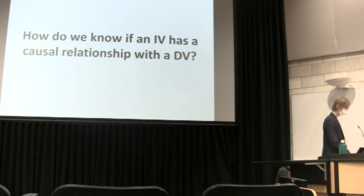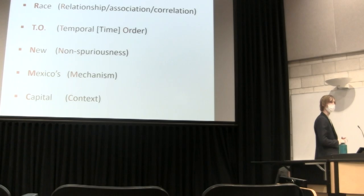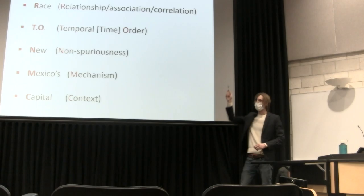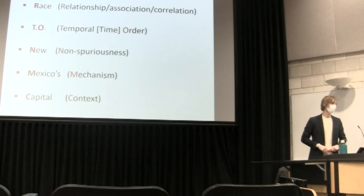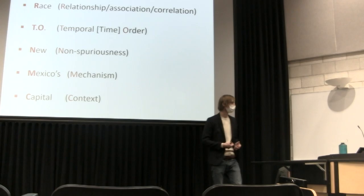So now we're going to get into those causation criteria. How do we ultimately know if an independent variable has a causal relationship with a dependent variable? I've mentioned some mnemonic devices before — I think they can be helpful for remembering things. So of course I have one here, a little bit silly, but: race to New Mexico's capital. And each of those kind of corresponds to one of these criteria, as well as relevant conditions we also have to consider.